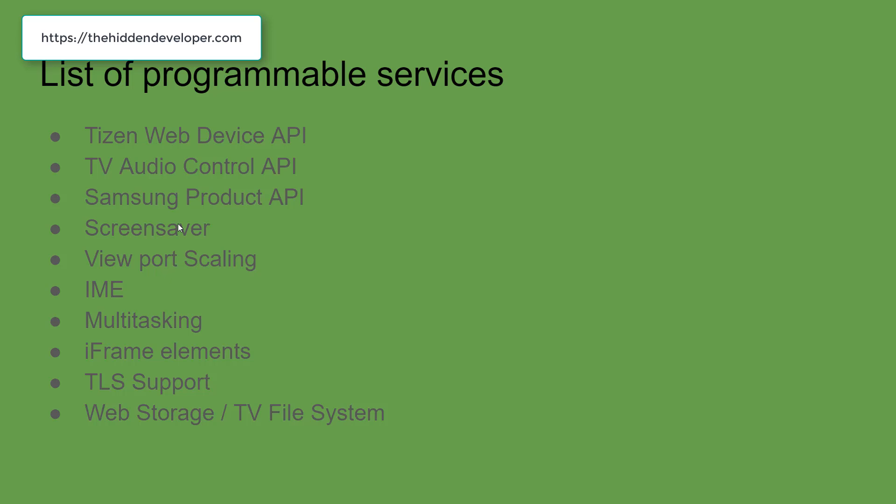That's a lot of stuff that Tizen provides for developers to manipulate and implement various services. Apart from this list of programming APIs provided by Tizen, you can also make use of external APIs available on the internet, as long as they play safe along with the standard Tizen TV API. This list on screen right now is the most commonly used set of APIs by developers for implementing various features.